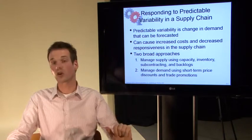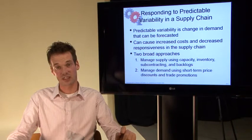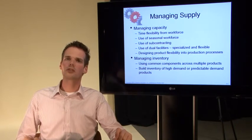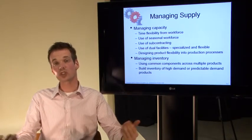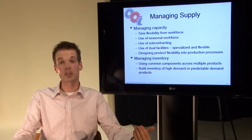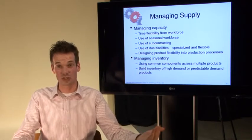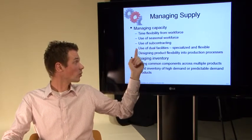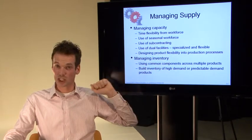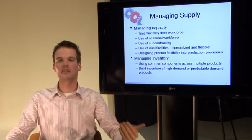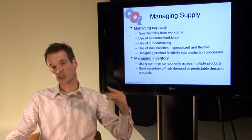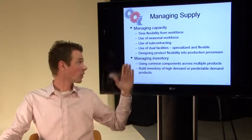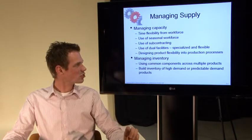Now we are focusing on the supply side for managing variability. As a supply chain manager your options include: using time flexibility from your workforce, using a seasonal workforce, subcontracting, and dual facilities — meaning a specialized facility and a flexible one. A specialized facility has relatively low fixed costs and high variable costs, while a flexible facility is the other way around. You can also design product flexibility into your production processes.